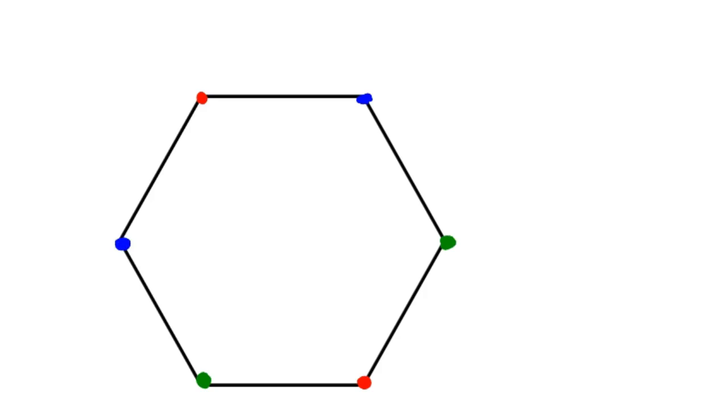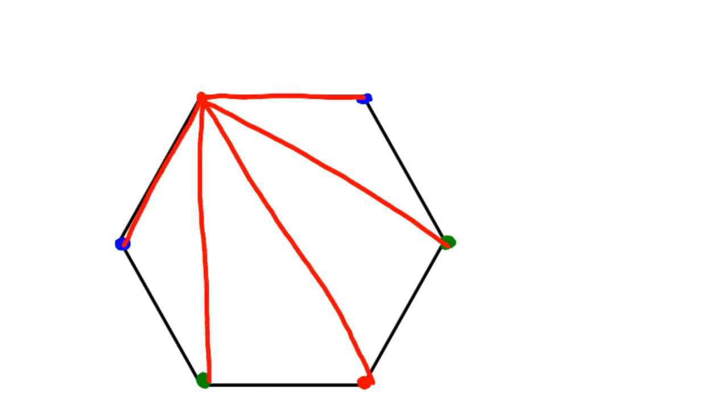So we'll start with the red person here in this upper corner. This person shakes hands with this blue person, shakes hands with this green person, shakes hands with the other red person, the other green person, the other blue person. And they've shaken hands once with everybody in there. So there are five people that he has shaken hands with, which should make sense.